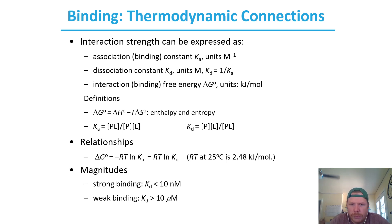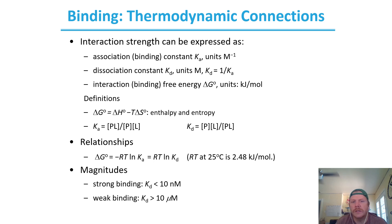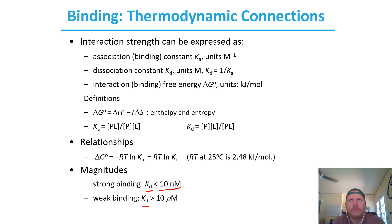Our relationship connects delta G to our association and dissociation constants. To characterize binding strength: strong binding would be a Kd less than 10 nanomolar, and weak binding would be a Kd greater than 10 micromolar. That's a barometer you can use when thinking about the affinity something has for its ligand.